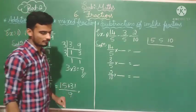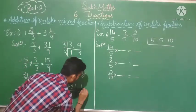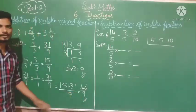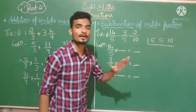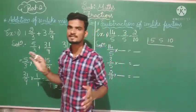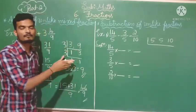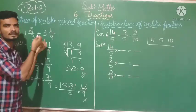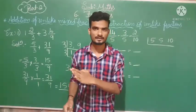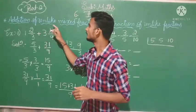Now we have like fractions 15/9 and 31/9. Add the numerators: 15 plus 31 = 46. The answer is 46/9. This is how you find the addition of unlike mixed fractions. Take the LCM of the denominators, convert to like fractions, then add all the numerators to get your final answer.